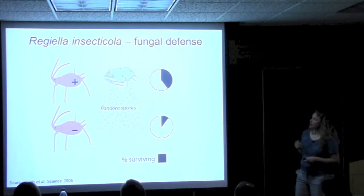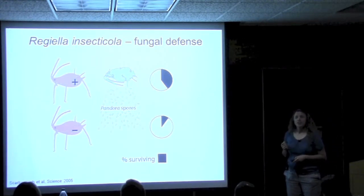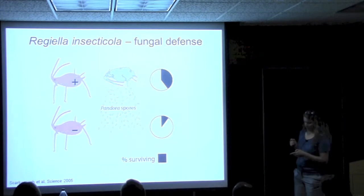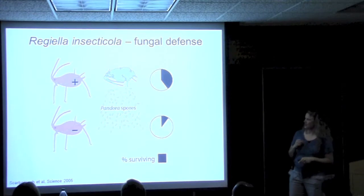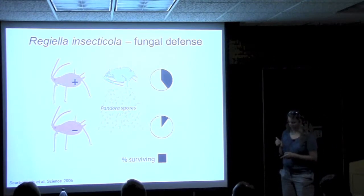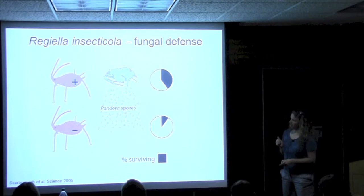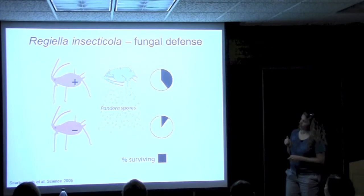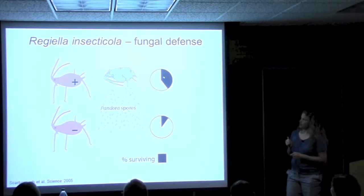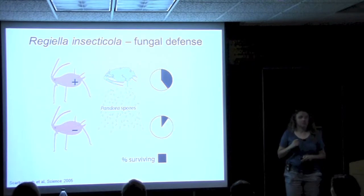Regiella insecticola provides the aphid with protection against fungus — in this case Pandora, not the music program, but a fungus that produces spores and is pretty deadly to aphids under some conditions. Again, the uninfected aphid challenged with Pandora spores virtually all die. When the bacteria Regiella is present, still a lot of them die, but a much greater percentage survive.